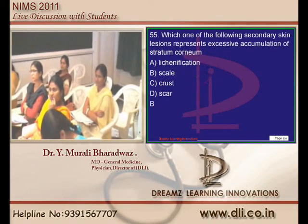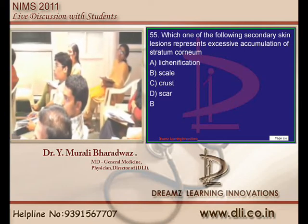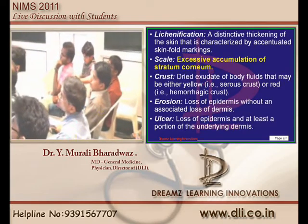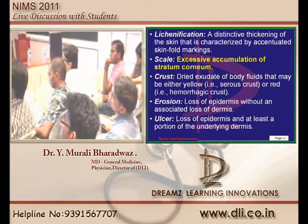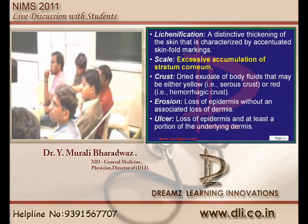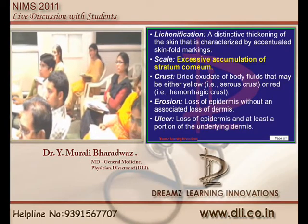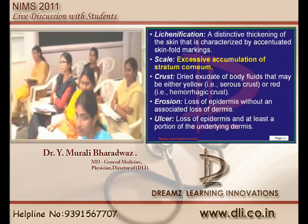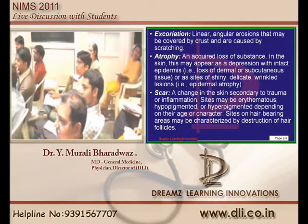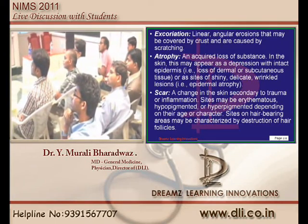What skin lesion is excessive accumulation of stratum corneum? We call it a scale. Scale is excessive accumulation of stratum corneum. A crust is a dried exudate of body fluid. Erosion is the loss of epidermis without associated loss of the dermis. When both dermis and epidermis are lost, you call it an ulcer. There is a lot to read in dermatology called the 'language of dermatologists' - even if you do not want to be a dermatologist, you still have to read it for the entrance exam.